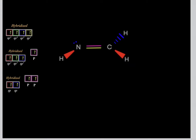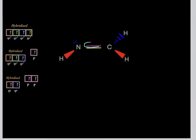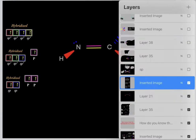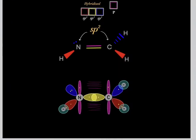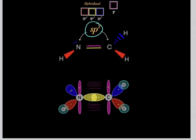Now let's try a tricky example. What is the hybridization of this nitrogen and this carbon? We see they have a double bond — one extra bond. If they have one extra bond, they must have one p-orbital. So they must be sp2-hybridized, because that's the type of hybridization that has one p-orbital. Both this nitrogen and this carbon are sp2-hybridized.